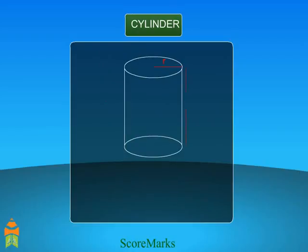The volume of a cylinder is the area of its base circle into height. Volume equals pi into r square into h, or V equals πr²h.